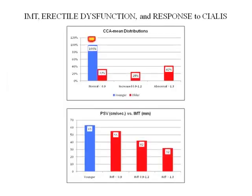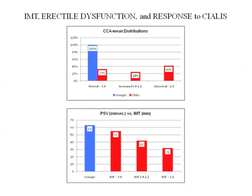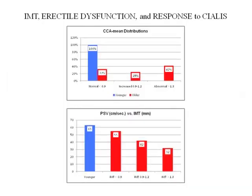The 30 younger men with psychogenic erectile dysfunction all had a normal intermediate thickness. Of the older men (60-plus years), a third had normal intermediate thickness, 25% had increased IMT, and 42% had a markedly increased IMT above 1.3. They had various degrees of soft plaque deposition, and we know soft plaque deposition as assessed by the carotid artery is predictive of obstructive disease elsewhere. Penile artery systolic blood flow was normal at 63 in the younger men — they had intact plumbing — and decreased progressively in older men with greater IMT.